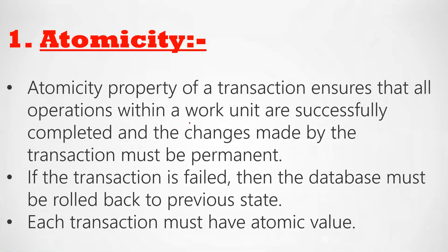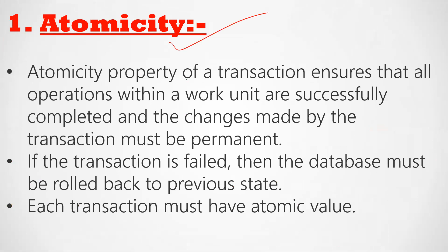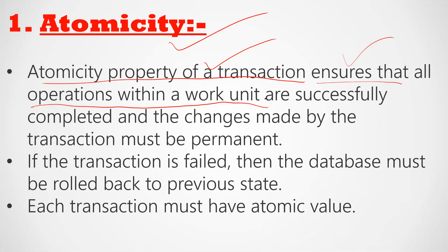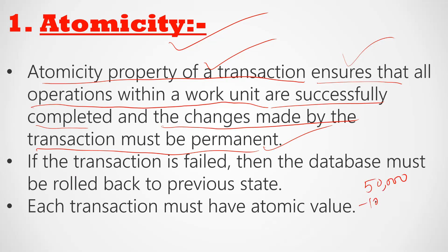Now let us look at the first property in detail: Atomicity. The atomicity property of a transaction ensures that operations within a work unit are successfully completed and the changes made by this transaction must be permanent. Atomicity gives us a guarantee that whatever operations we perform in a database system, if the transaction is successful, the changes are permanently applied to the database.